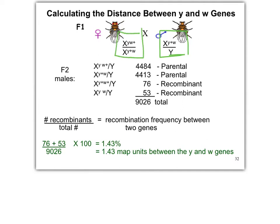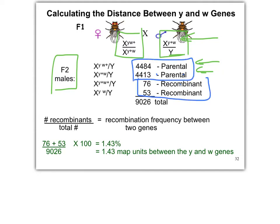If we look at the F2 and we only look at the males, right, we're only looking at one chromosome, and that will help us — essentially just like looking at a test cross. We look at the numbers, and parental are always the higher numbers. So even if I didn't give you these, and I asked you which ones are parental and which ones are recombinant, you would know, because the two higher numbers are parental and the smaller numbers are recombinant.